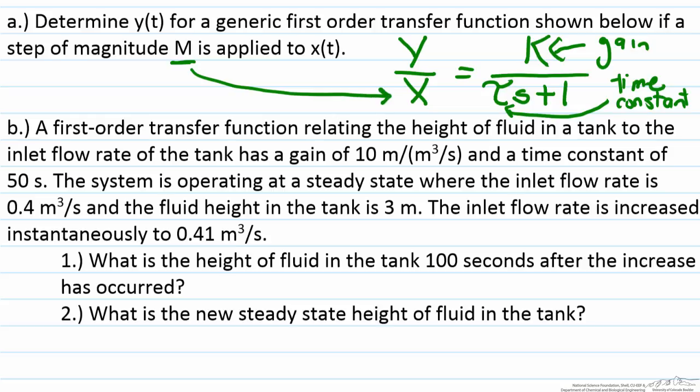The reason why we are keeping things in generic terms k, tau, and m instead of numbers is because if we develop a generic relationship this relationship will hold for all first order transfer functions, not mattering both the magnitude of the values or what type of process it is.